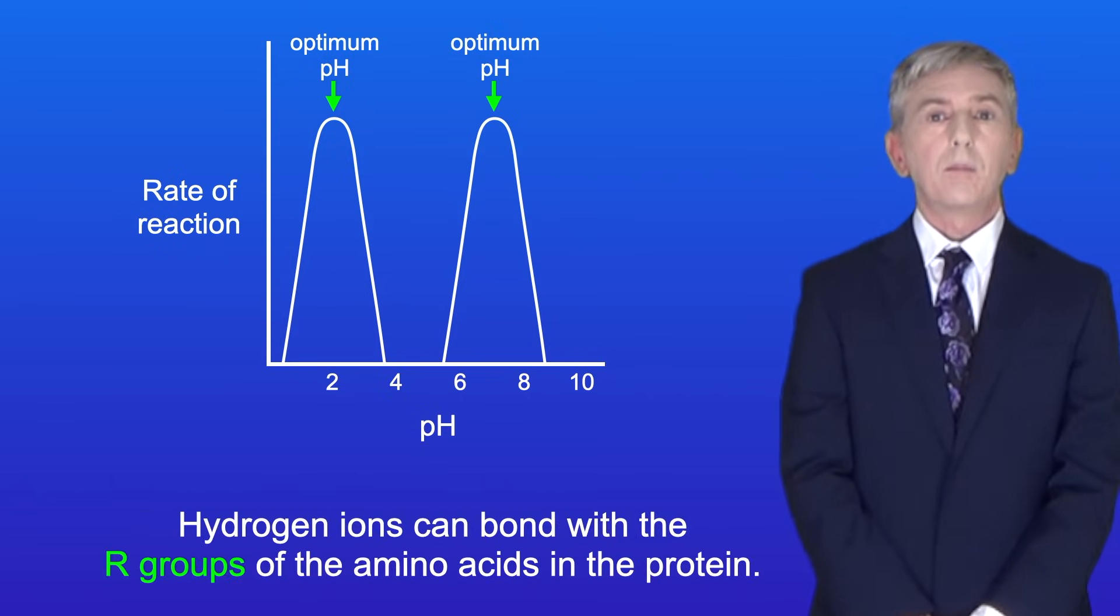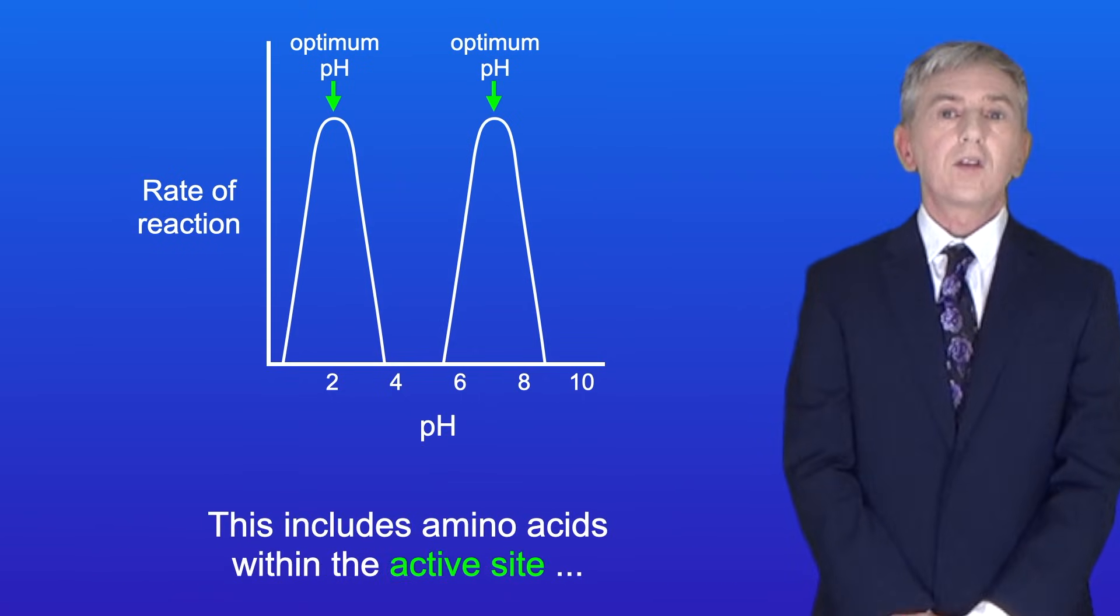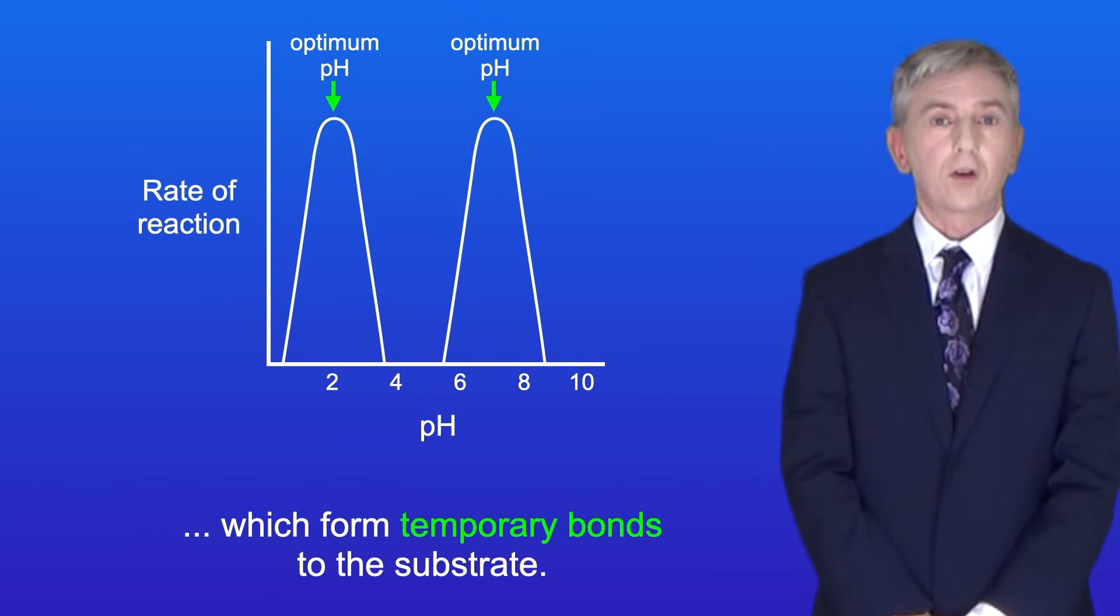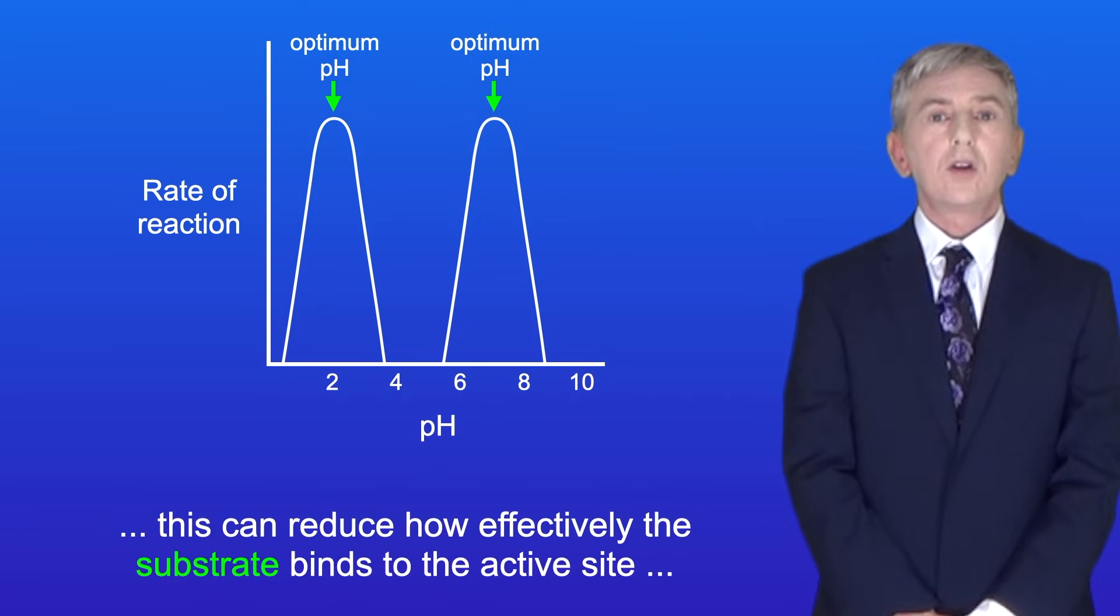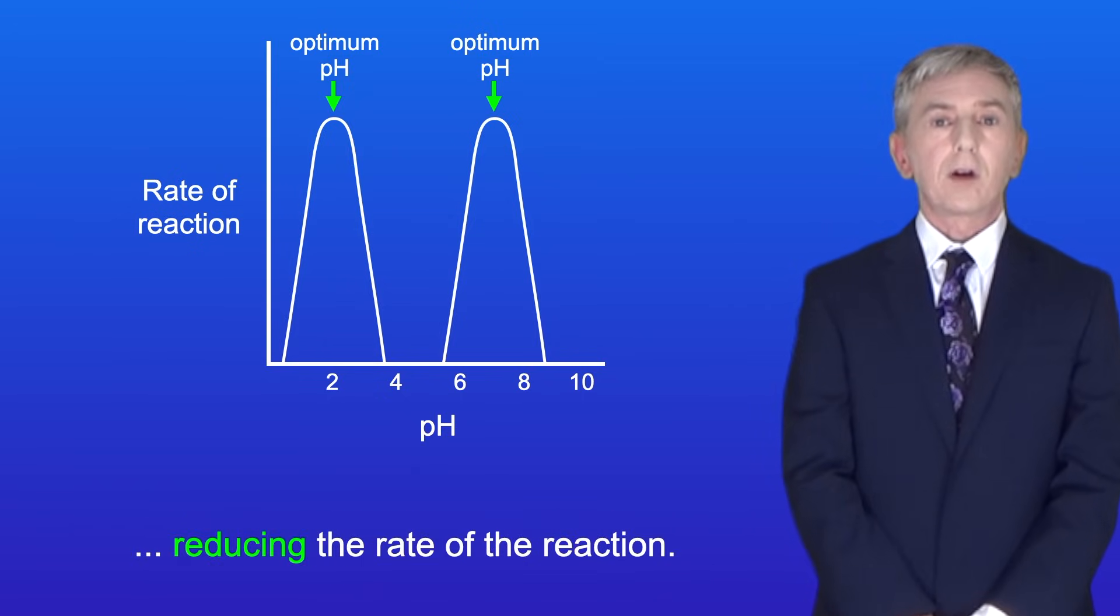Hydrogen ions can bond with the R-groups of the amino acids in the protein. This includes amino acids within the active site, which form temporary bonds to the substrate. Because this can prevent these R-groups from bonding with the substrate, this can reduce how effectively the substrate binds to the active site, reducing the rate of the reaction.